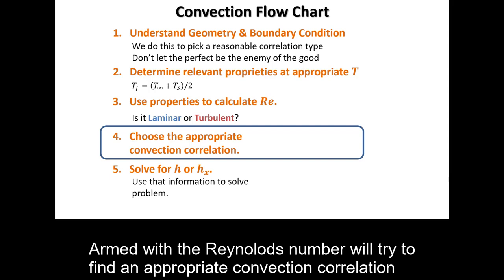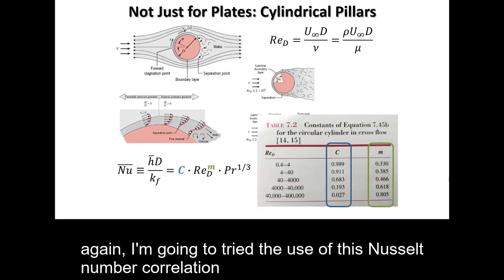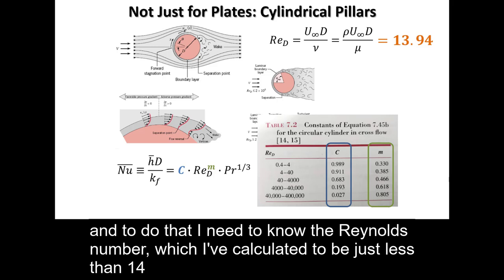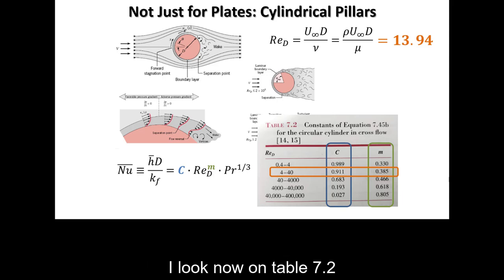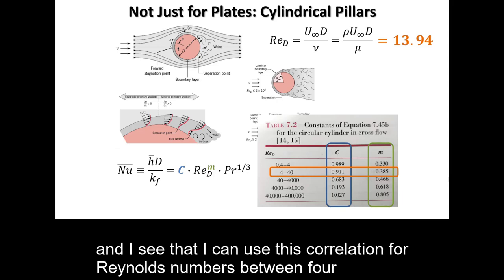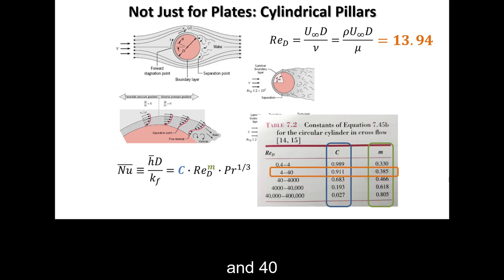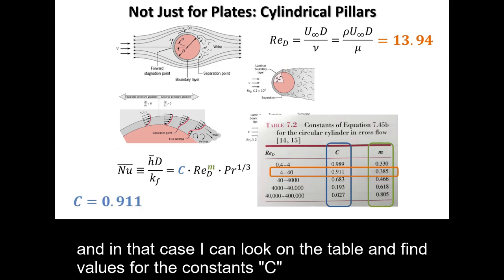Armed with the Reynolds number, we'll try to find an appropriate convection correlation. I'm going to try to use this Nusselt number correlation, and to do that I need to know the Reynolds number, which I've calculated to be just less than 14. I look at Table 7.2 and see that I can use this correlation for Reynolds numbers between 4 and 40. In that case, I can find values for the constants C and M from the table.